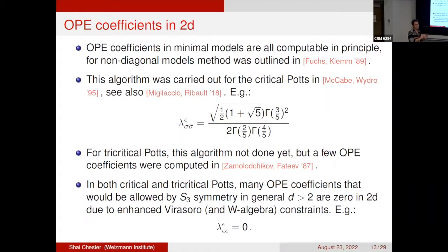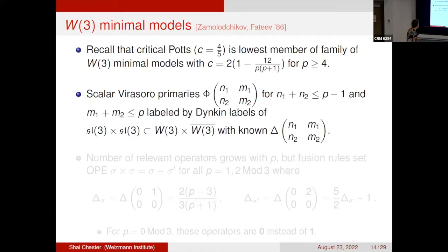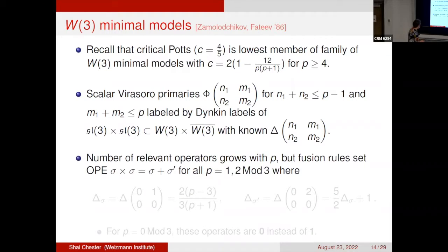For instance, the OPE coefficient of three singlet ε operators is zero in 2D, similar to the Ising model in 2D, but this is not generically true above 2D. Before discussing the bootstrap, note that the critical Potts CFT in 2D is the lowest member (p=4) of a family of W3 minimal models labeled by integer p, with central charge c as a function of p. These are also exactly solvable, with scaling dimensions given by a compact formula. The fusion rules show that in the σ×σ OPE, only two Virasoro primaries appear — σ and σ' — for all p.